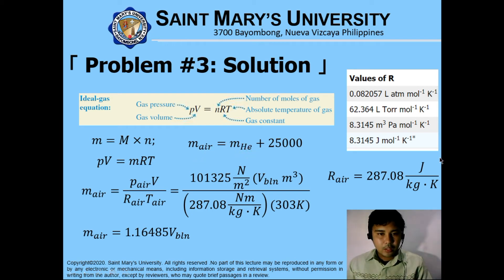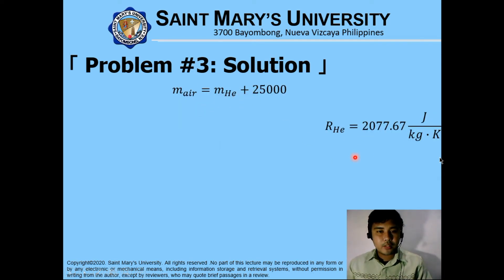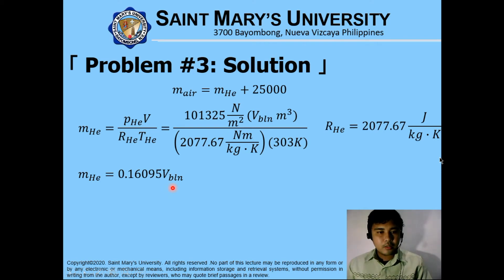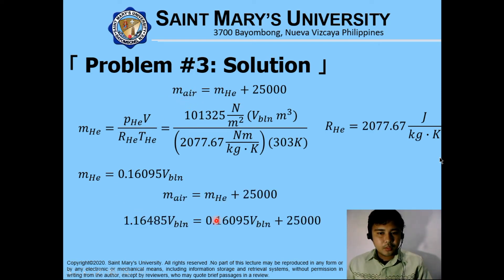Mass of helium in terms of V — we could now find for the volume. Here again is our underlying equation. The gas constant for helium is 2,077.67. Manipulating the equation again, from our pressure, we have the same pressure as air. Volume has only changes in the gas constant R. Our temperature is provided, same units will cancel out. Our mass for helium is 0.1695 times the volume for the balloon. We can now input that. From what we have solved, the mass of air is 1.16485 V.